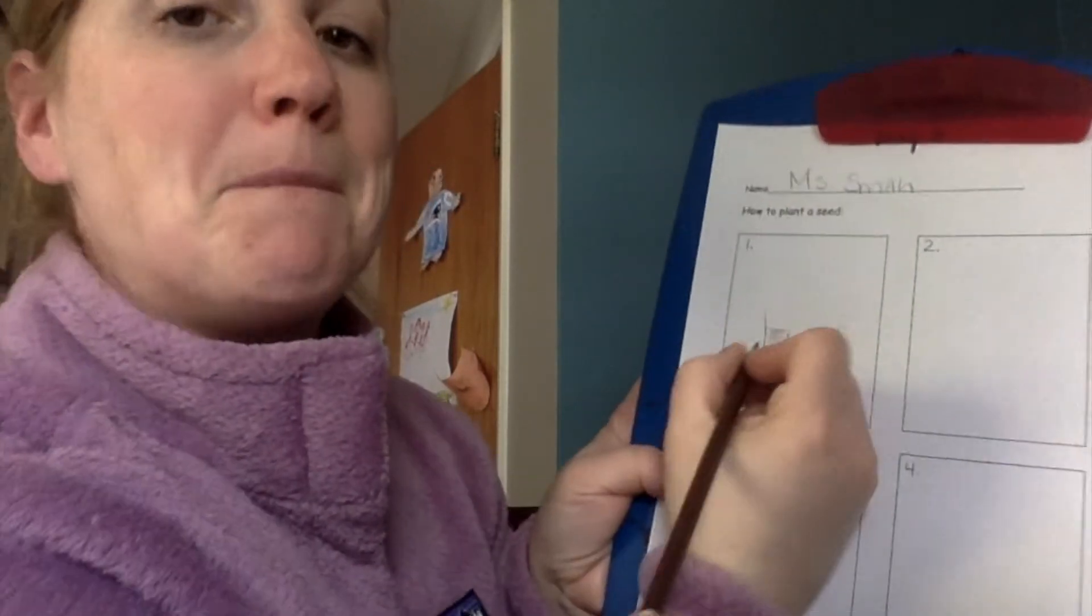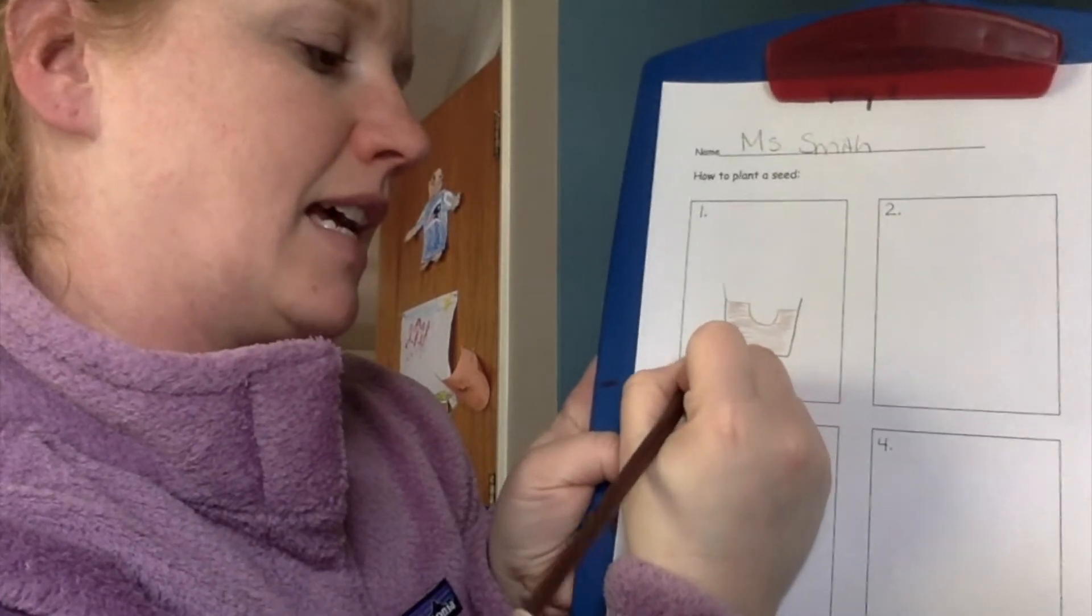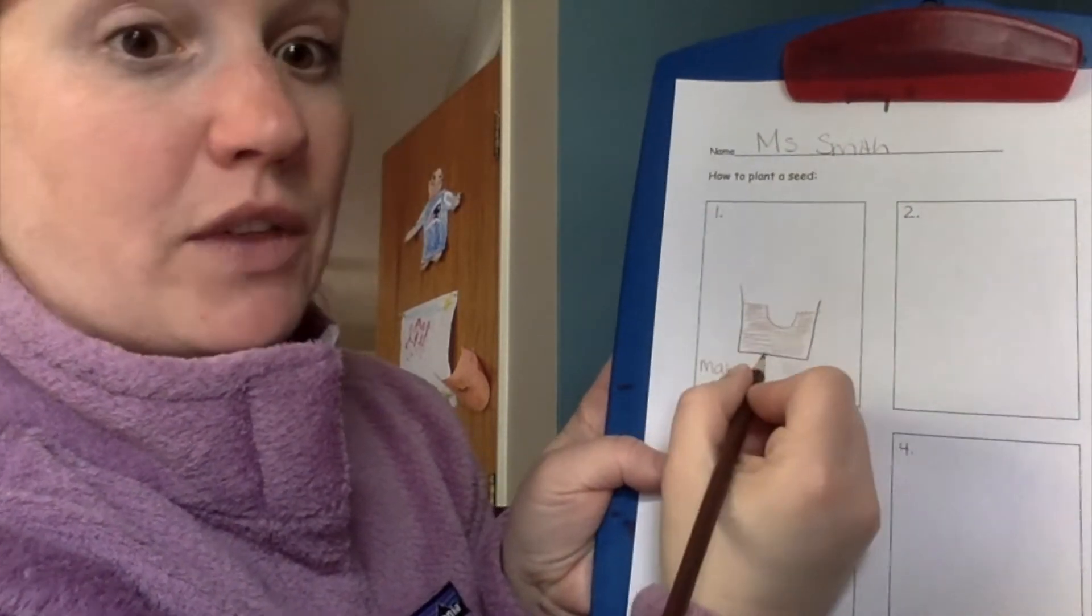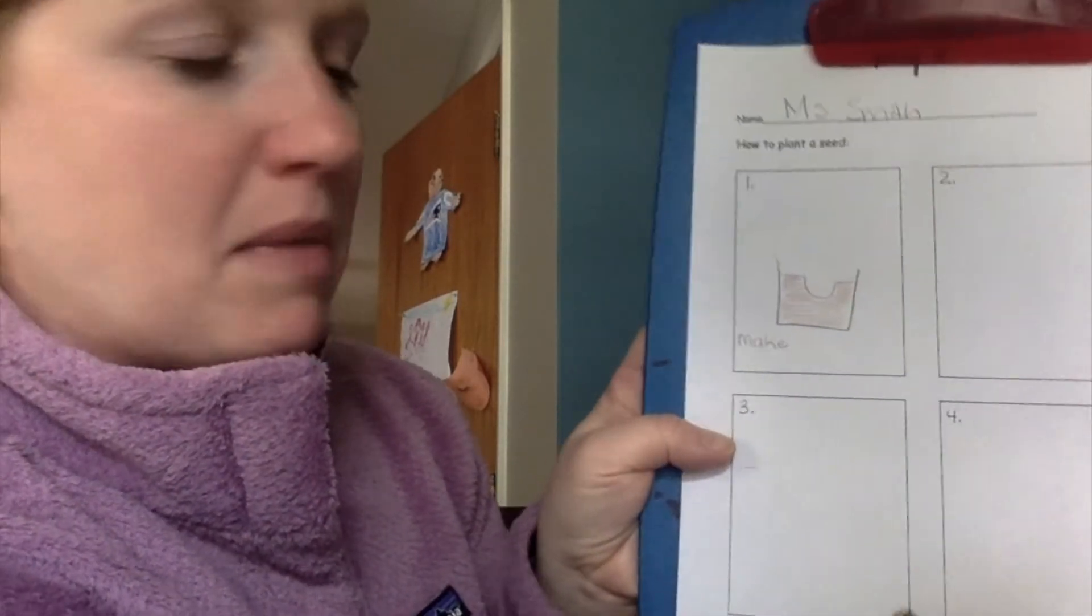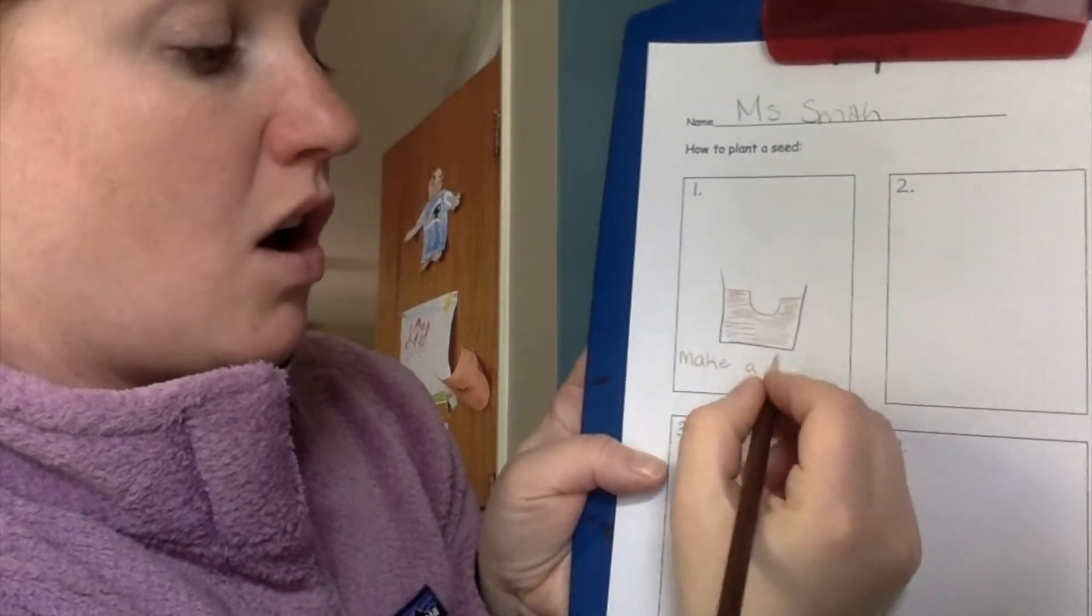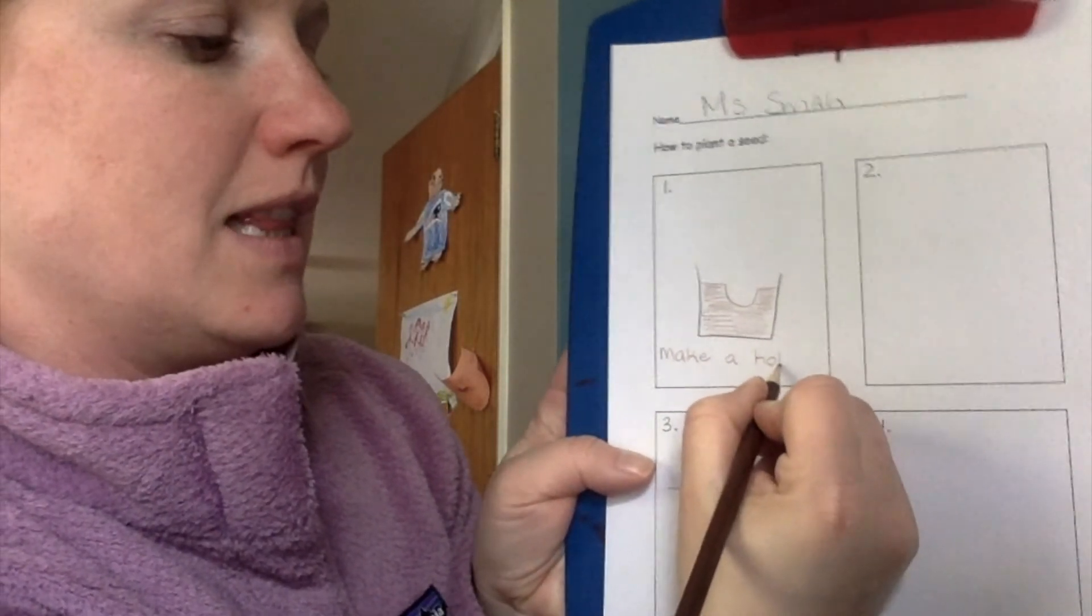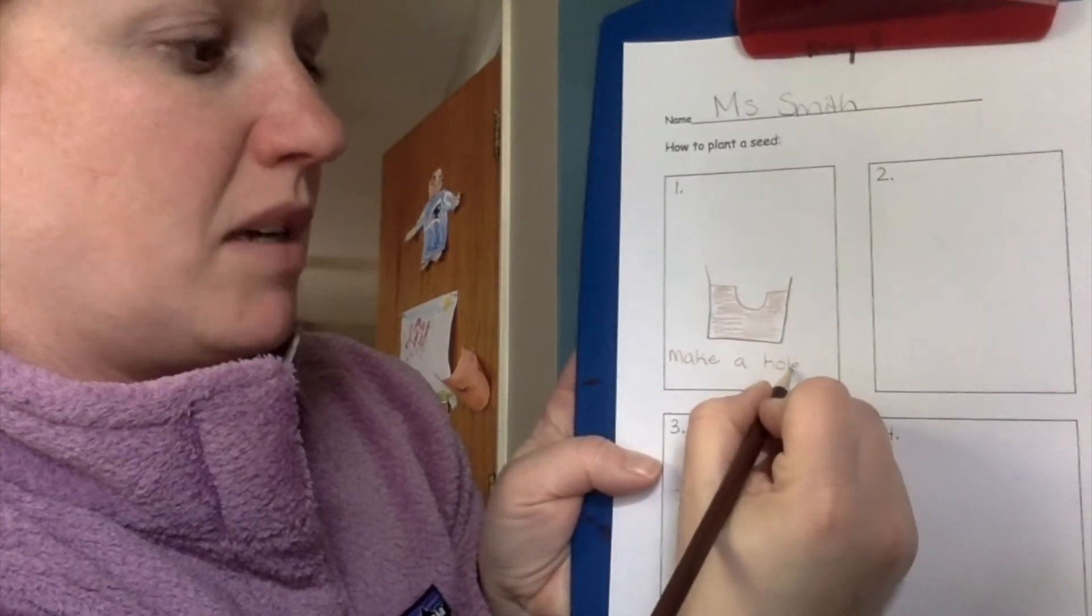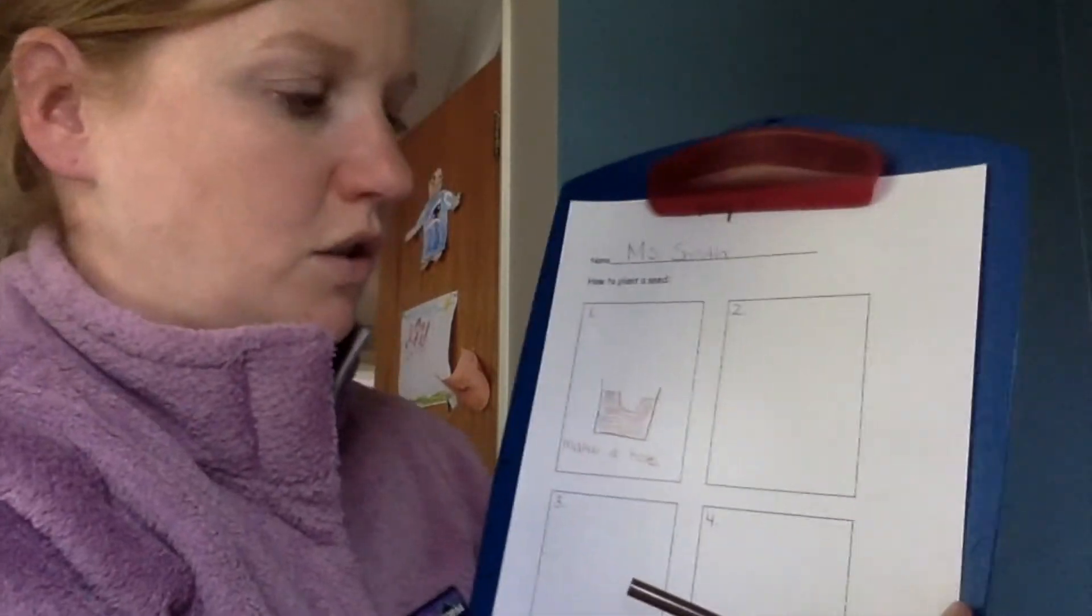So make. M. A. K. I know that that has a King Ed bossy E on the end. Make. A. I know how to spell that. Hole. H. O. And that has another bossy E. So mine says make a hole. You can write whatever word you want and you can sound them out however you want to. The idea is just to practice.